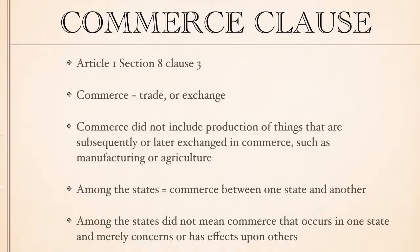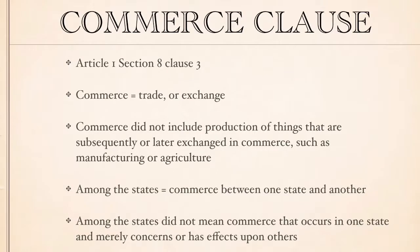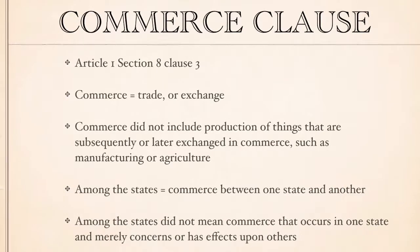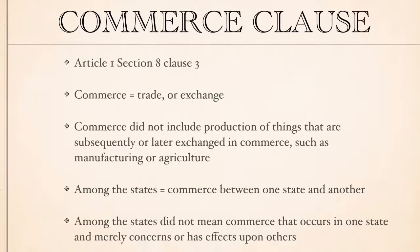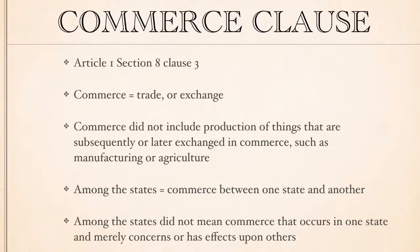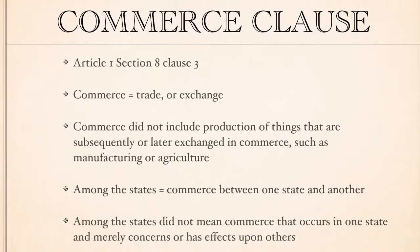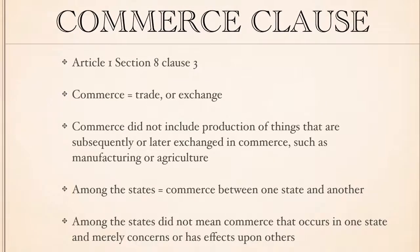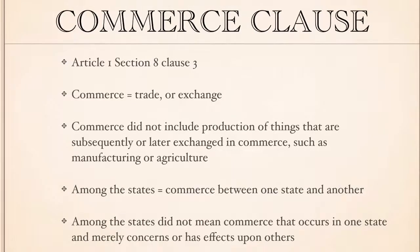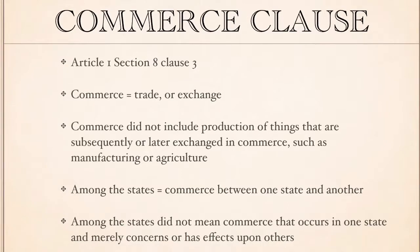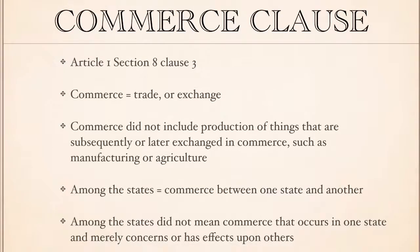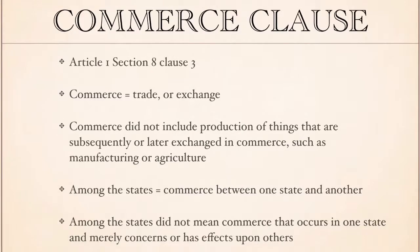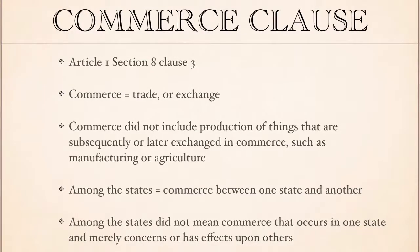The Constitutional Clause whose faulty interpretation has caused more mischief than any other is arguably the Commerce Clause, found in Article I, Section 8, Clause 3. It grants Congress the power to regulate commerce with foreign nations and among the several states and with the Indian tribes. To understand the original intent of this clause, we need to define key terms. First, what did the framers of the Constitution mean by commerce? It turns out that it is impossible to find a mention of commerce at the Constitutional Convention or in the Federalist Papers that clearly refers to anything other than mere trade or exchange. Thus, the term commerce used in the Constitution means only trade and exchange.